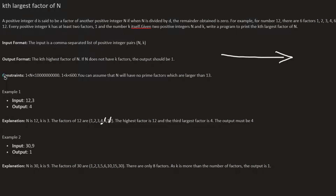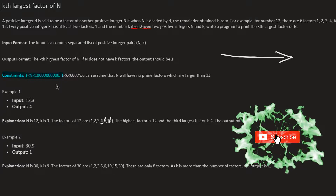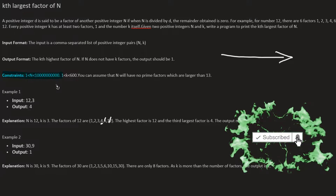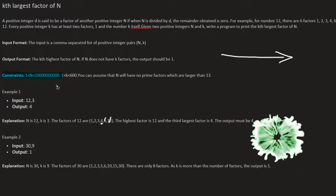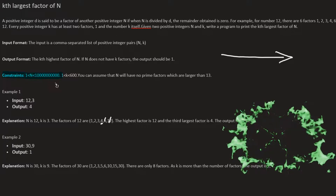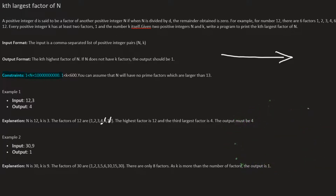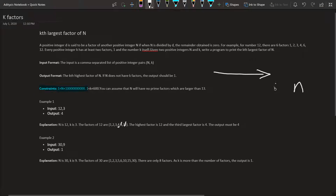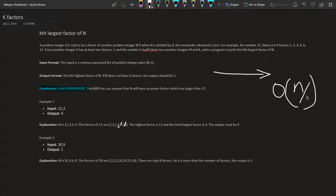But this is not going to work because here you can see the constraint. The first and foremost thing you should always focus on is the constraint, because it tells you what time complexity you are going to need. Here you can see n is a really large number, so even if you use O(n) complexity this code is not going to work. Even n/2 won't work here.